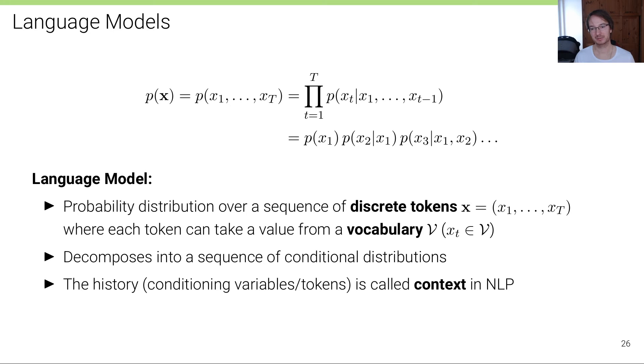In the unit on convolutional networks we call this the receptive field. Here it's called context.